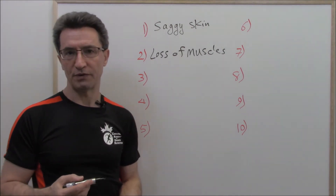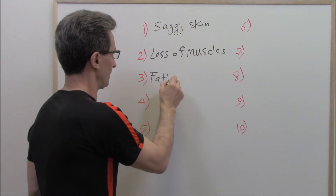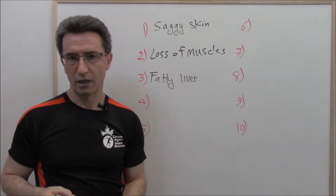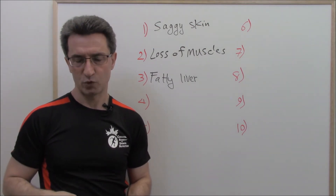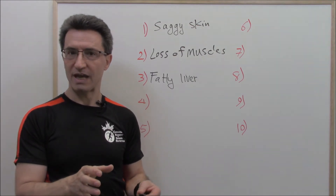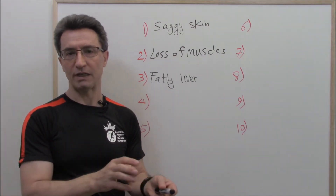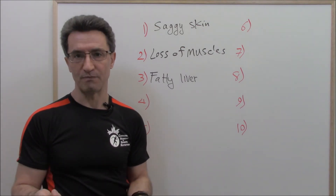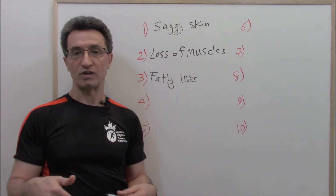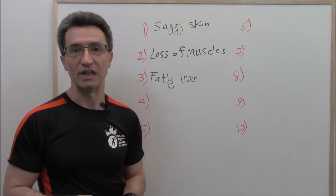Complication number three is fatty liver — non-alcoholic fatty liver. If you lose weight rapidly, you can induce fatty liver. Or if someone already has fatty liver, rapid weight loss can make it even worse. We know the reason: it is because of the mobilization of tissue triglyceride, which increases the total amount of triglyceride delivered to the liver.